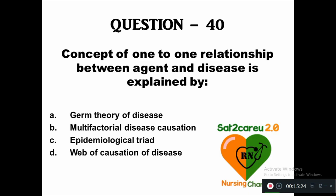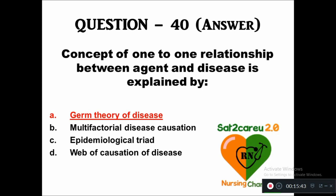Question 40: The concept of one-to-one relationship between agent and disease is explained by — option A: germ theory of disease, B: multifactorial disease causation, C: epidemiological triad, D: web causation of disease. The right answer is germ theory of disease, which explains the one-to-one relationship between agent and disease.